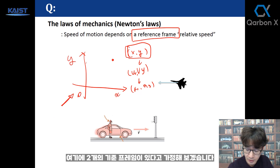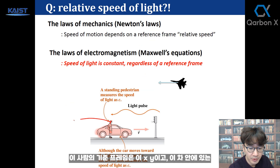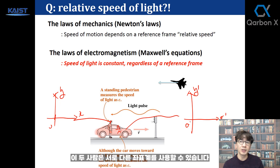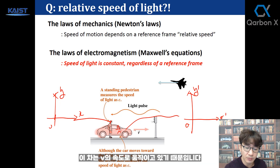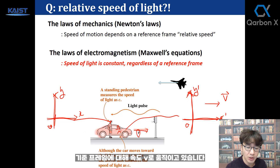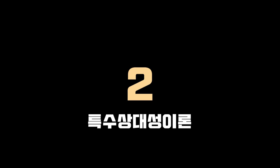Let's say we have two reference frames. This person's reference frame, let's say x, y. And the person inside this car, let's say x prime, y prime. Those two people will probably use different coordinate systems, because this car is moving at a velocity v. So this coordinate system is moving at speed v with respect to this reference frame, which remains at a fixed position.